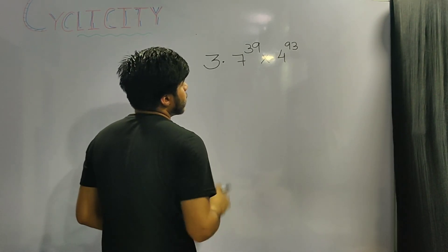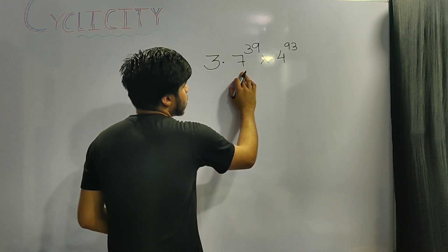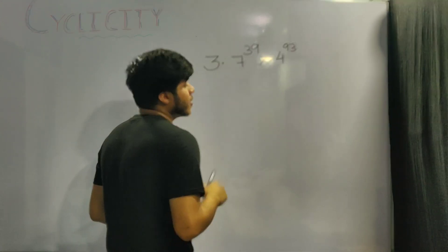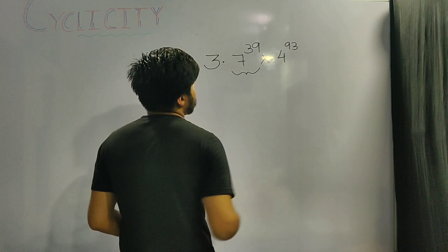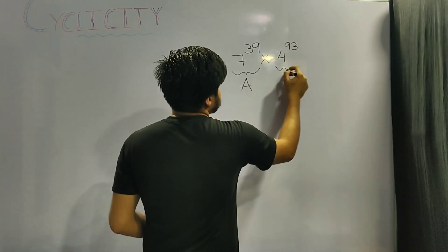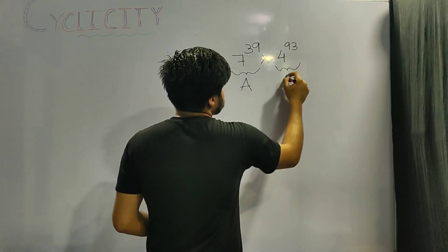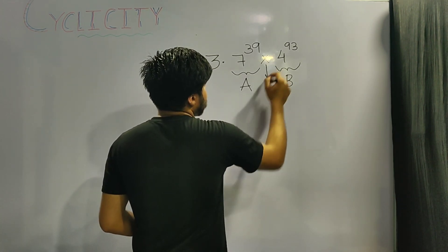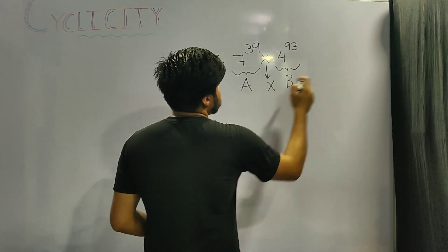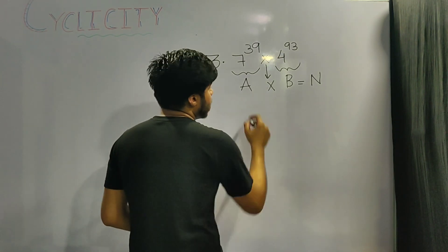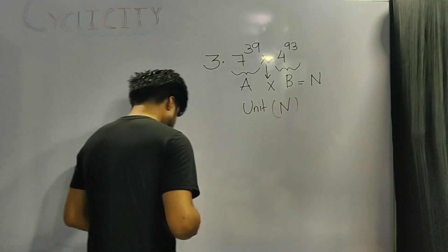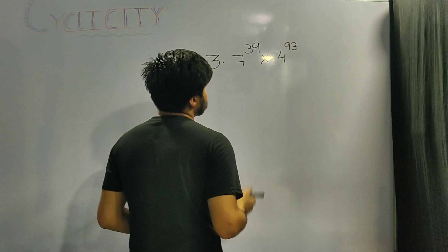In the third question we are asked to find the unit digit of 7 raised to the power 39 multiplied by 4 raised to the power 93. This is a different kind of question. First, we find the unit digit of the first number — call it a. Then we find the unit digit of the second number — call it b. We apply the same operation given in the question, here multiplication, and the unit digit of the resulting product is our final answer.